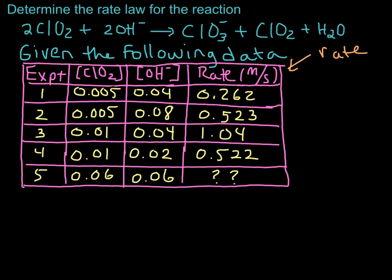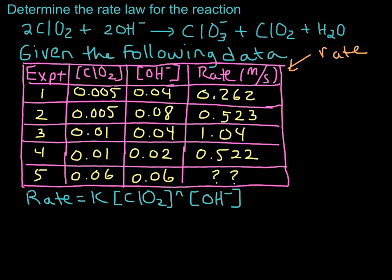We want to figure out the rate law for this reaction, so let's remind ourselves about what the general rate law would look like. The rate is equal to the rate constant times the concentration of chlorine dioxide raised to some power N — that's the order of chlorine dioxide — multiplied by the concentration of hydroxide to some power M. Our goal is to figure out what N and M are.